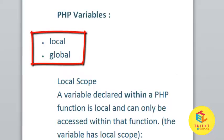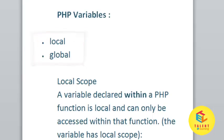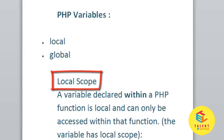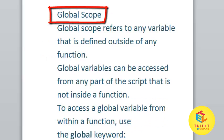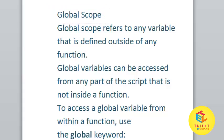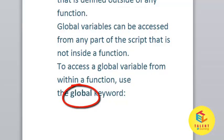PHP has two kinds of variables: local variable and global variable. A local variable is declared within a PHP function and can only be accessed within that function. A global variable is defined outside of any function and can be accessed from any part of the script that is not inside a function. To access a global variable from within a function, use the global keyword.